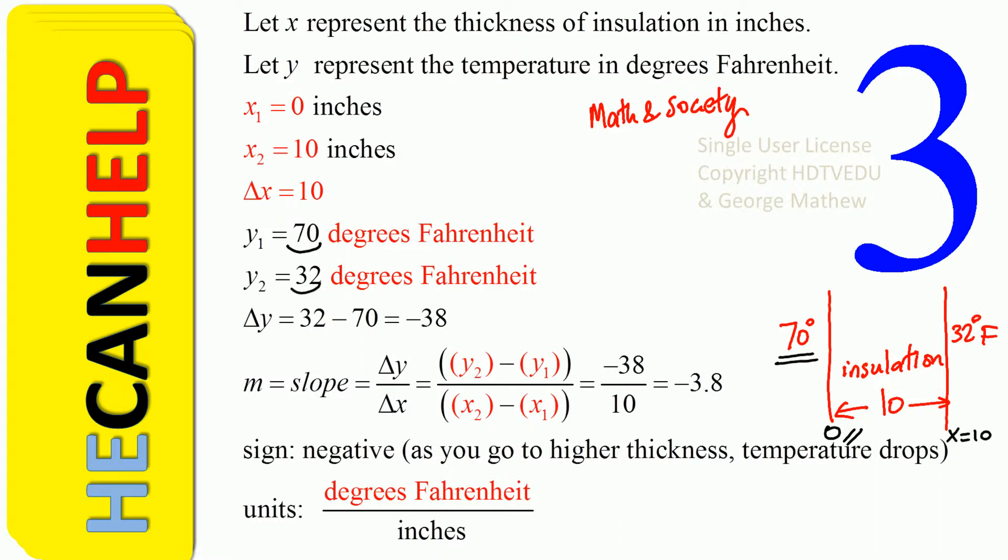So what is change in y? 32 minus 70, which is negative 38. And what is change in x? 10 minus 0, which is 10. So we have change in y and change in x. What is the slope? Negative 38 divided by 10, which is negative 3.8.